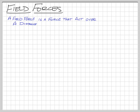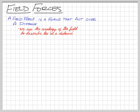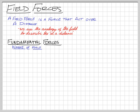There are five field forces that we know about. We use the analogy of the field to describe this at-a-distance thing. Our field forces come from our five fundamental forces — every single force you can think of can be reduced to these five. We're going to look at the name of each force, the fundamental quantity involved, and what the field is for each force. In general, the field is the force divided by the fundamental quantity.